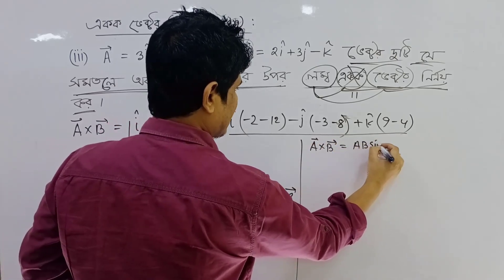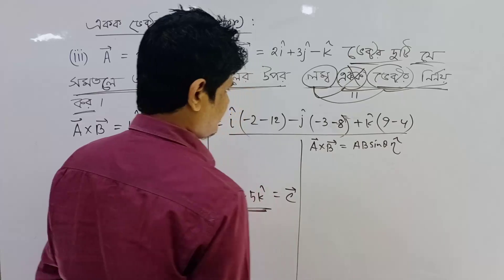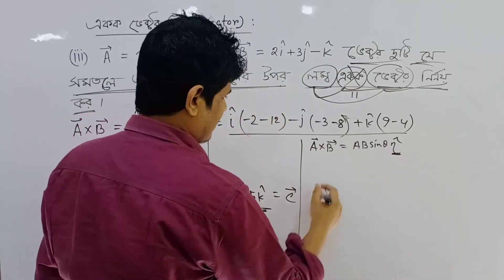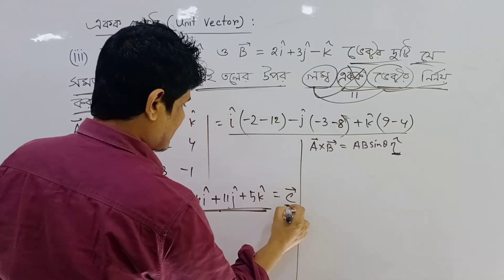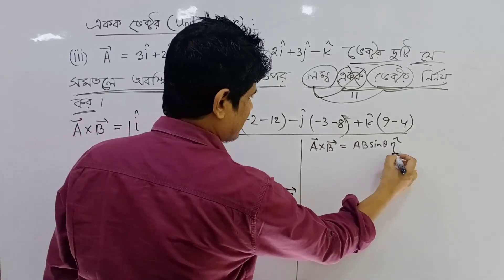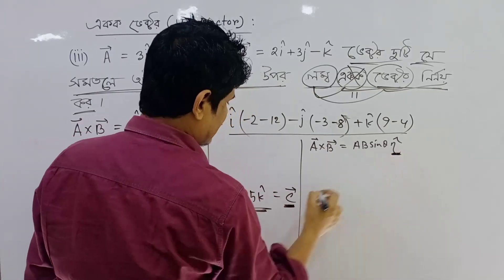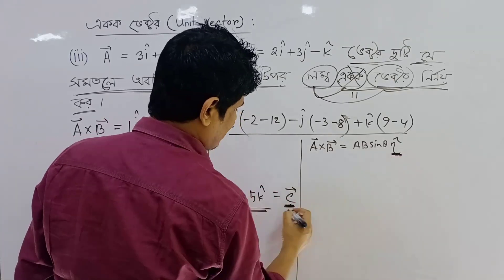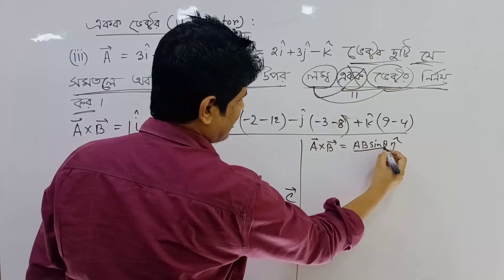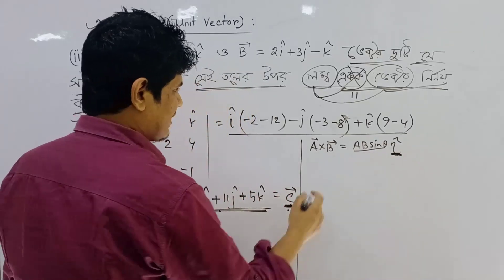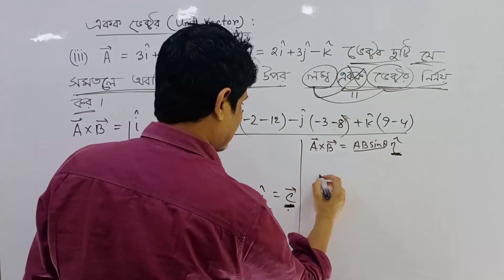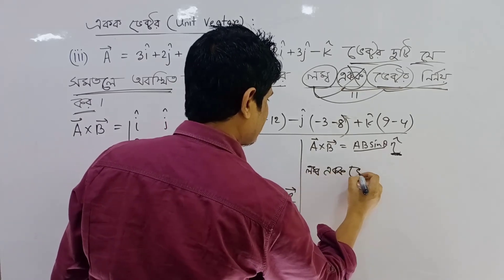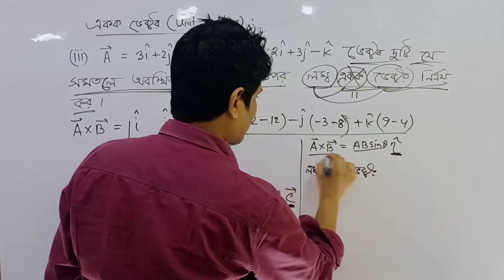A cross B equals ab sin theta eta. This is a long vector. Now I need to find this unit vector — the equal vector. C really equals the equal vector.